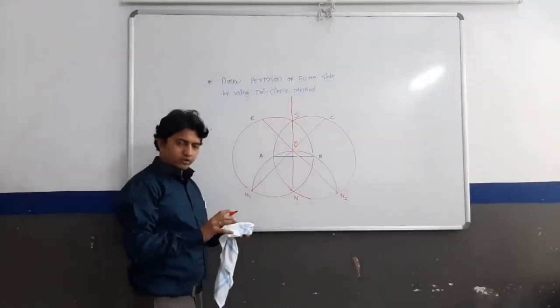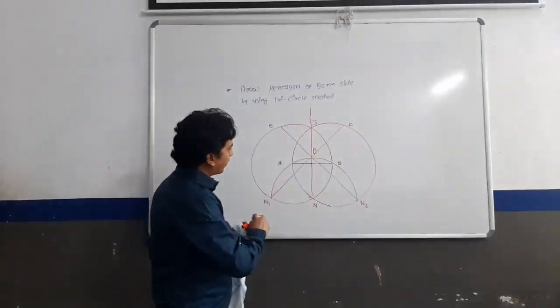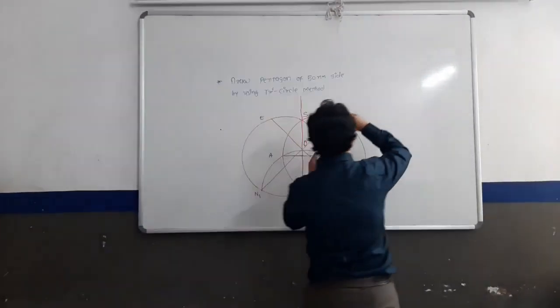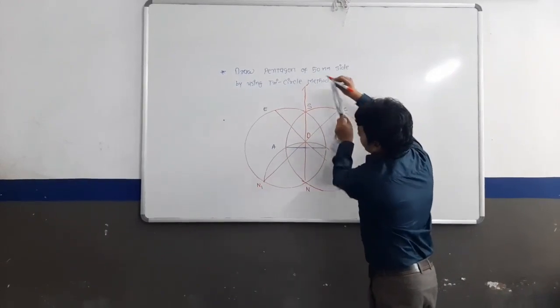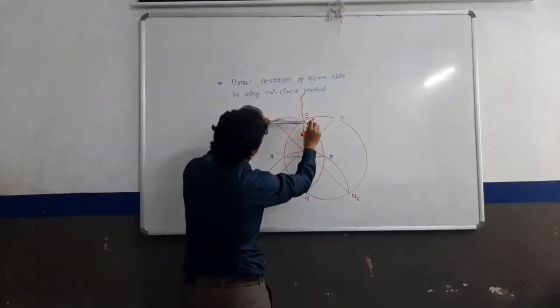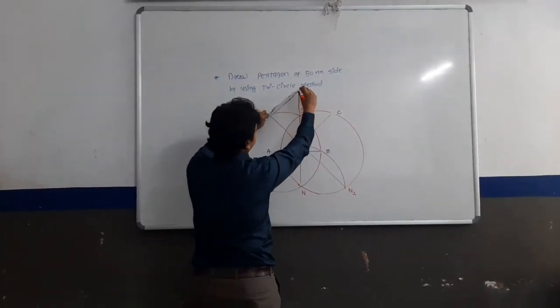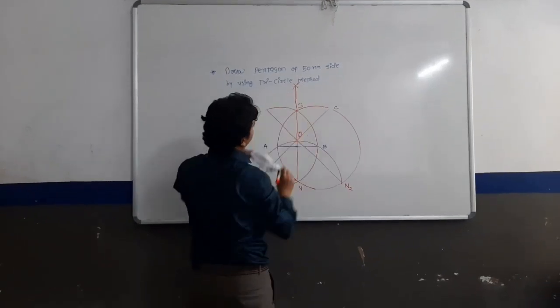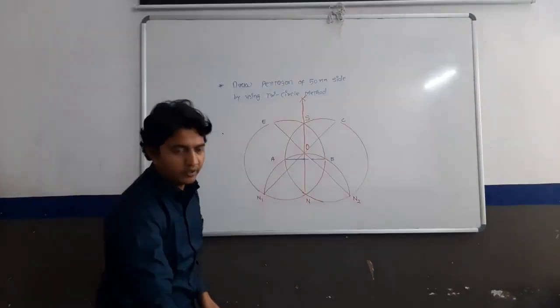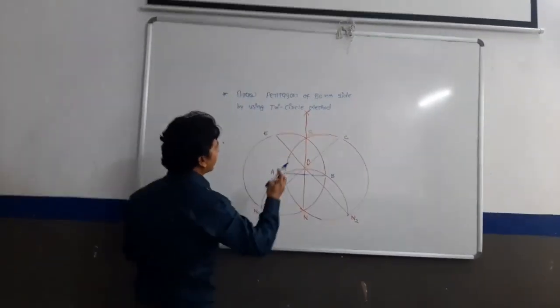The last point: 50mm radius equal to AB. Keeping point E as the center with this radius, draw a curve on the right side. These intersecting curves give us point D.